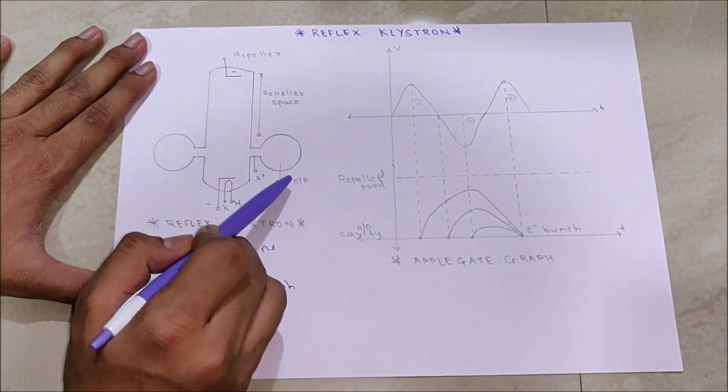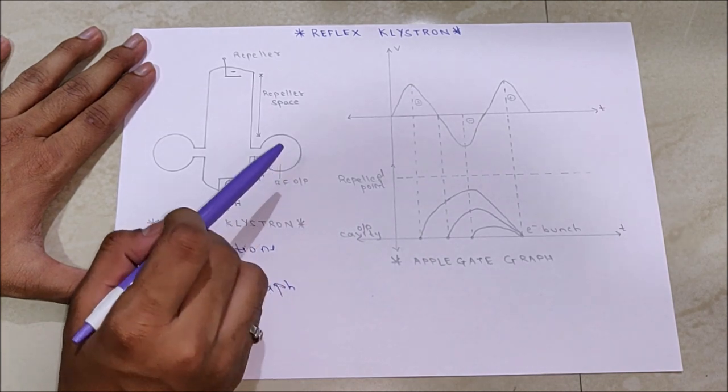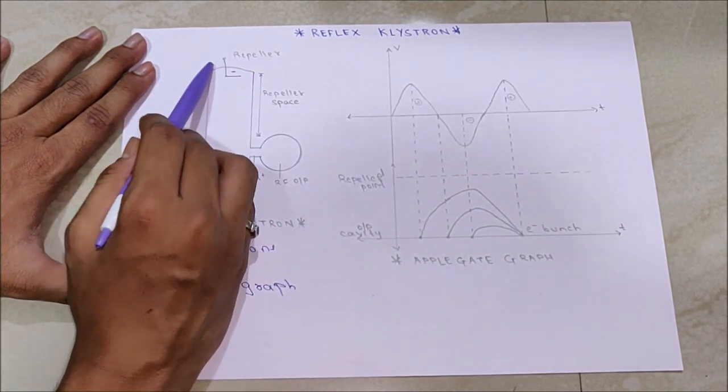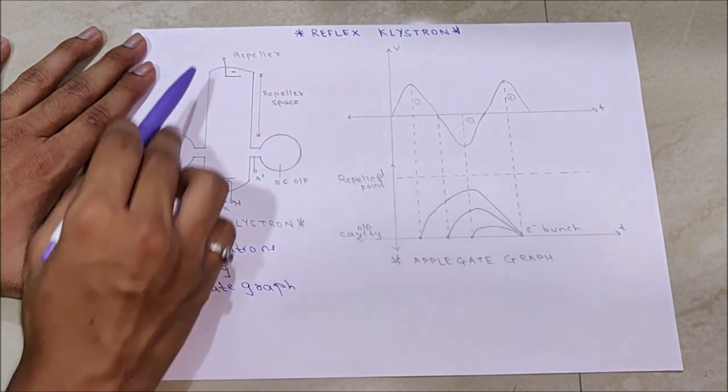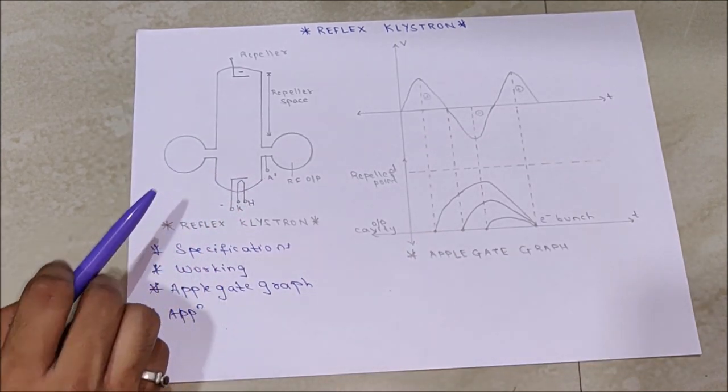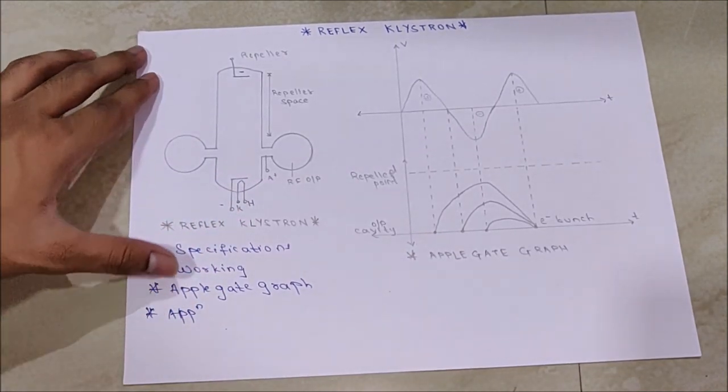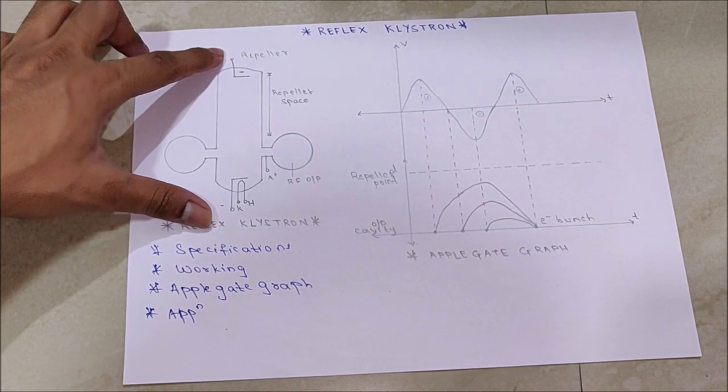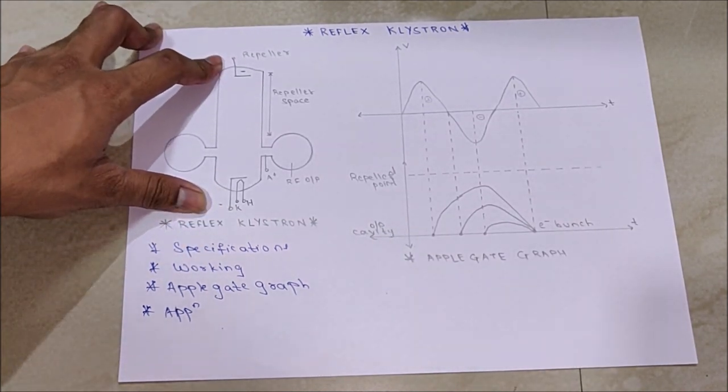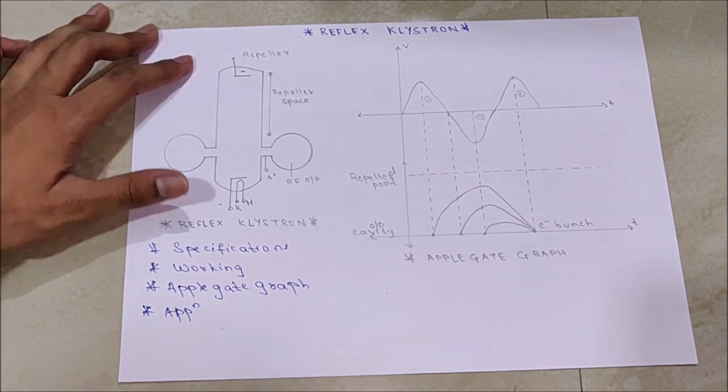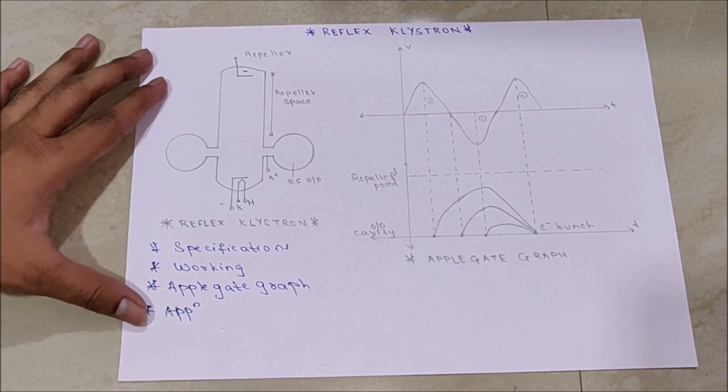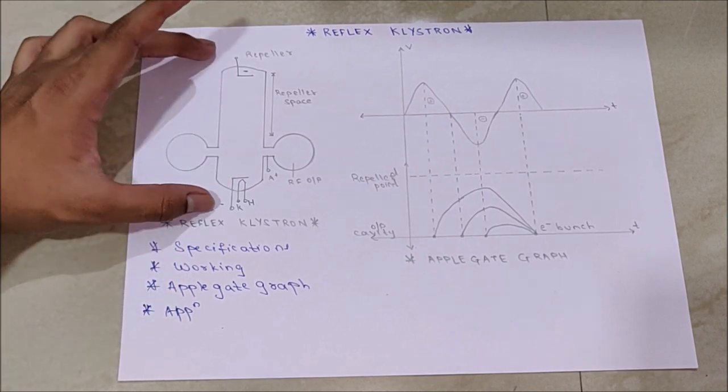We have a repeller space, an RF output cavity, a heater, and repeller which are both negatively charged, and an anode. First, we provide high reverse bias voltage to cathode and repeller under heater conditions to form an electron beam. These are the initial conditions.